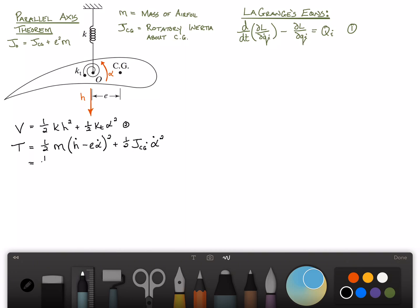Multiplying this out, we get one-half times mh dot squared minus, the two cancels the half, e mh dot times alpha dot, plus one-half m e squared alpha dot squared. In fact, let's write it as e squared m plus j cg times alpha dot squared.